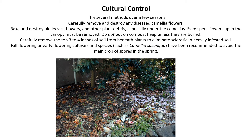There are some cultural control methods you can use to try to manage this disease, and you can try several of these over a few seasons. Carefully remove and destroy any diseased camellia flowers. Rake and destroy old leaves, flowers, and other plant debris, especially under the camellias. Even spent flowers up in the canopy must be removed. Do not put them on a compost heap unless they are buried.